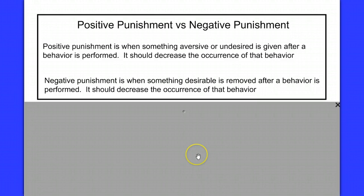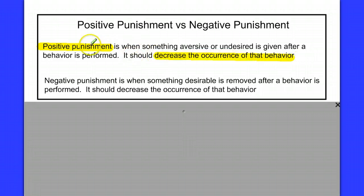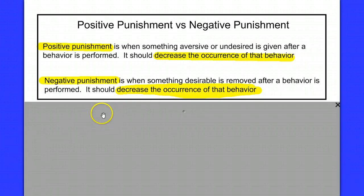Now let's look at punishment: positive punishment versus negative punishment. Don't equate positive with good and negative with bad — think of positive as addition and negative as subtraction. Positive punishment is when something aversive is given after a behavior, like being assigned extra chores, which should decrease the occurrence of that behavior. Negative punishment is when something desirable is taken away — like losing TV time or video games for the week — and that removal should also decrease the occurrence of the behavior.